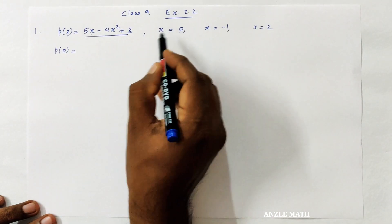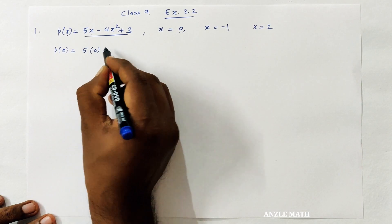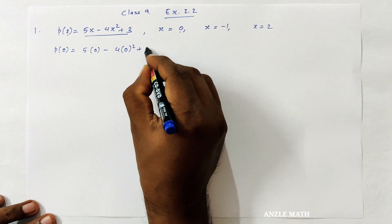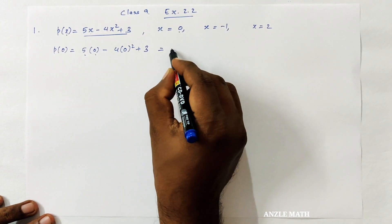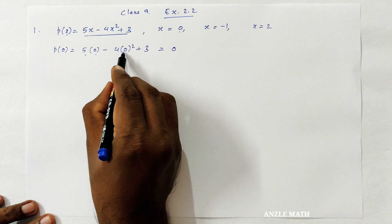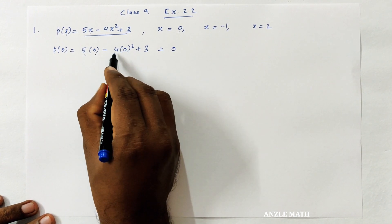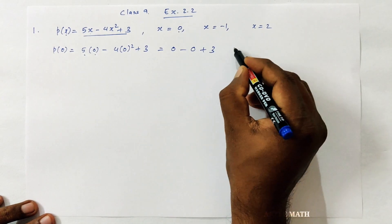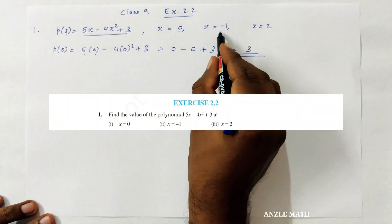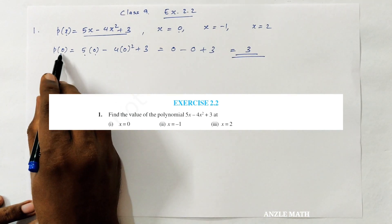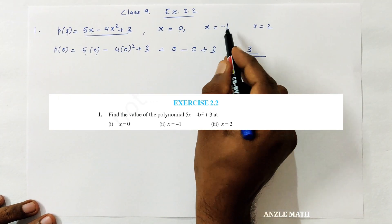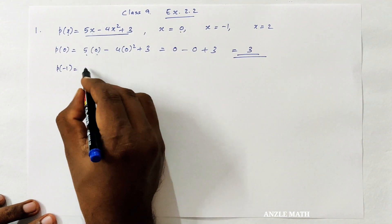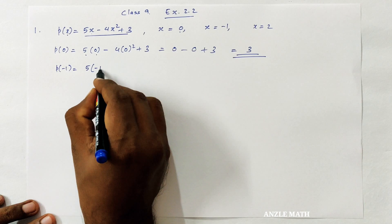Then x is equal to 0: 5 into 0, minus 4 into 0 squared, plus 3. 0 squared is equal to 0, 0 into 4 is 0, so minus 0 plus 3, so the answer is equal to 3.